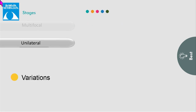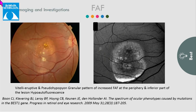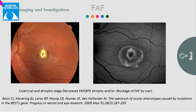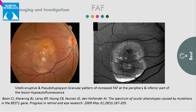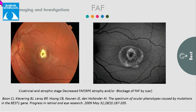Moving on to investigations. On fundus autofluorescence, in the vitelliform stage there is intensely increased autofluorescence. In the vitelleruptive stage, there is a granular increased pattern of fluorescence seen at the periphery and inferiorly. Whereas in atrophic and fibrotic stages, there is decreased autofluorescence due to atrophy and scar formation.